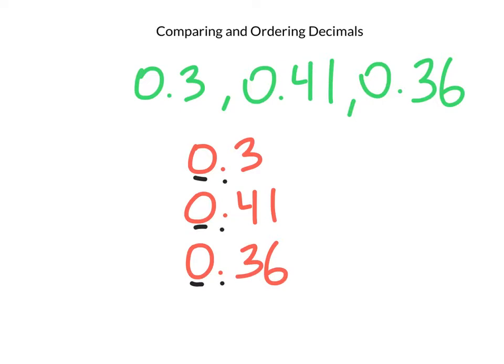In the tenths place value, the top number has a 3, the middle number has a 4, and the bottom number has a 3. It's easy to tell that 4 is bigger than 3, so this number here, 0.41, is the biggest.